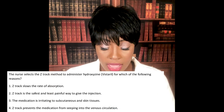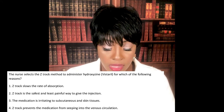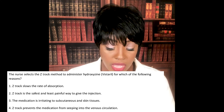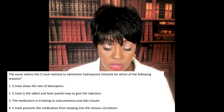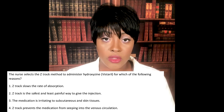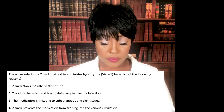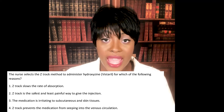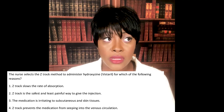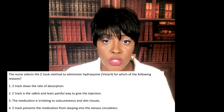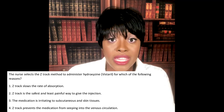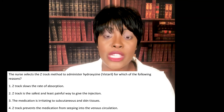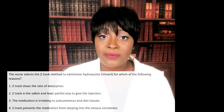Next question: The nurse selects the Z-track method to administer hydroxyzine visceral. Why? The correct answer is three — the injection is irritating to subcutaneous and skin tissues. The Z-track method seals the medication into the subcutaneous tissue, preventing it from seeping out. Another medication requiring Z-track for the same reason is iron — it's very irritating and the Z-track keeps it contained in that subcutaneous area.